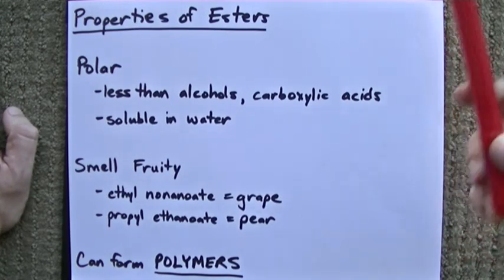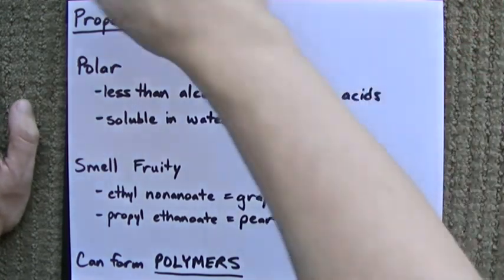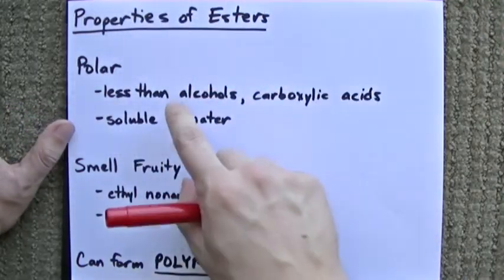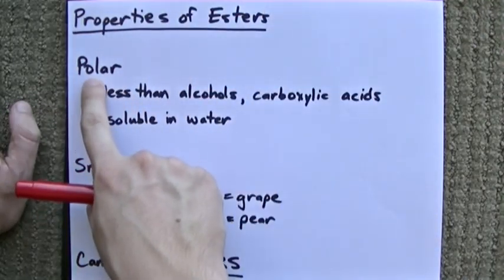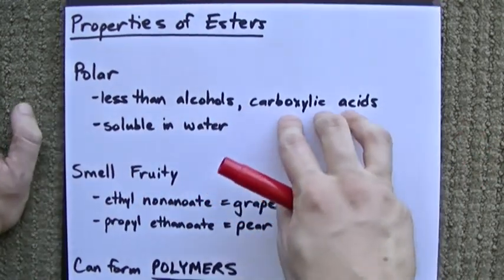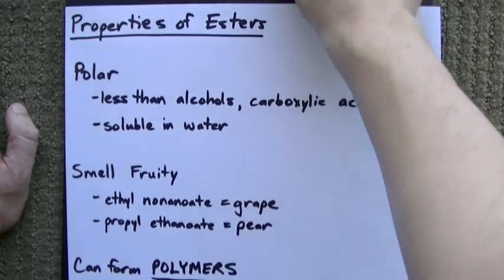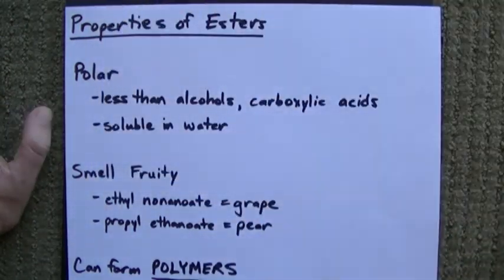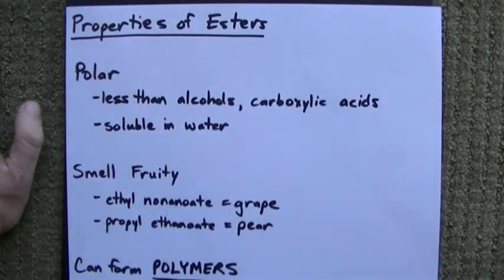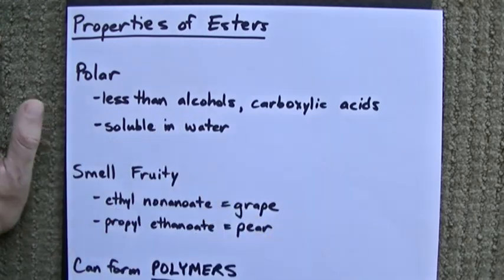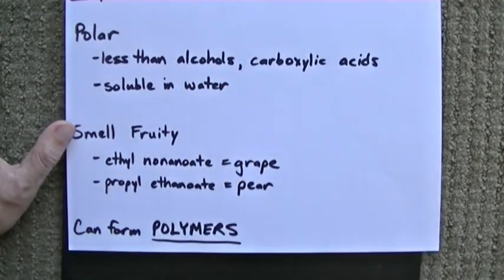Now, because there are oxygens hanging out, especially double bonded ones, and the oxygens are in close proximity, these compounds are polar. Hopefully it's obvious they're less polar than carboxylic acids, because carboxylic acids don't have an extra carbon chain to bulk them up. But they're even a little less polar than alcohols. Something to keep in mind. And because they're polar, they are generally soluble in water.